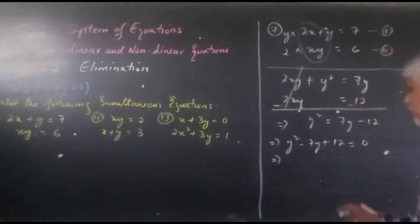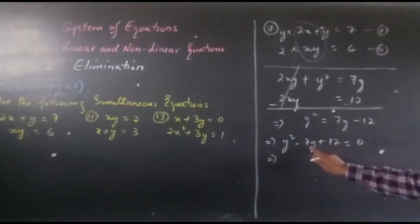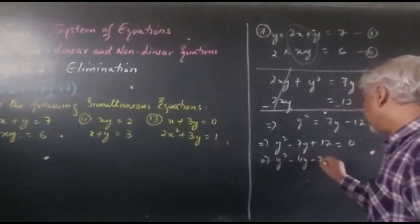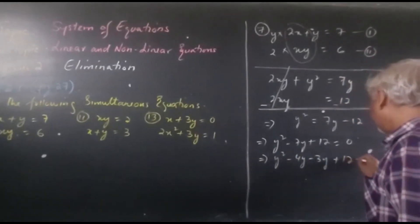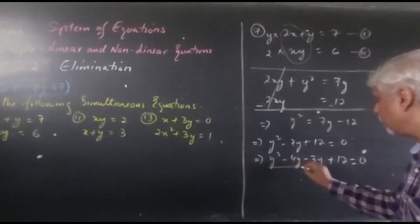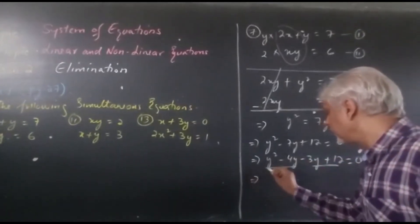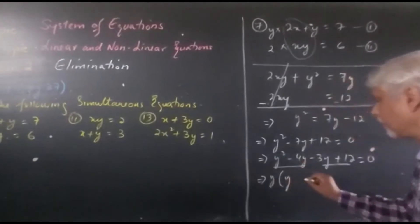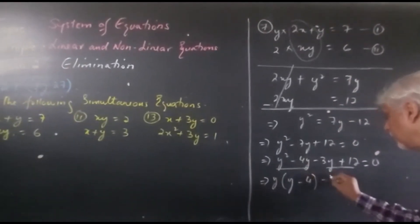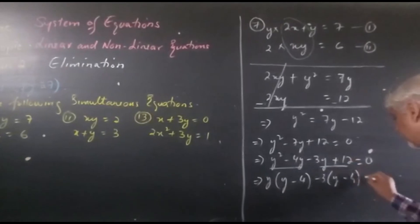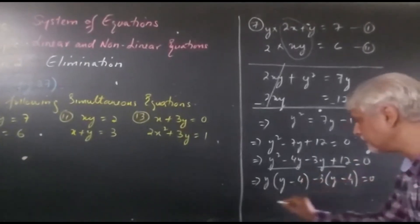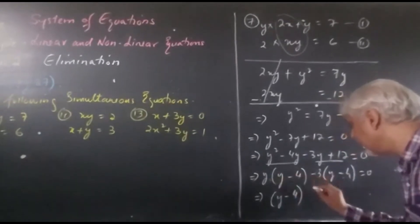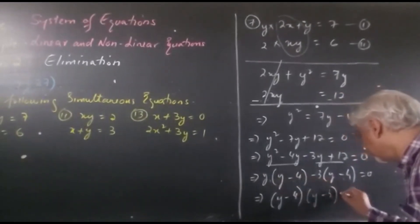Factors of 12 when added or subtracted give you 7 is 4 and 3. So y squared minus 4y minus 3y plus 12 equals 0. Now we take common between these two and these two terms. We are factorizing it using factorization method. Y minus 4, y minus 3. These two brackets should be the same. So we have one factor y minus 4 and the other is y minus 3 equals 0.